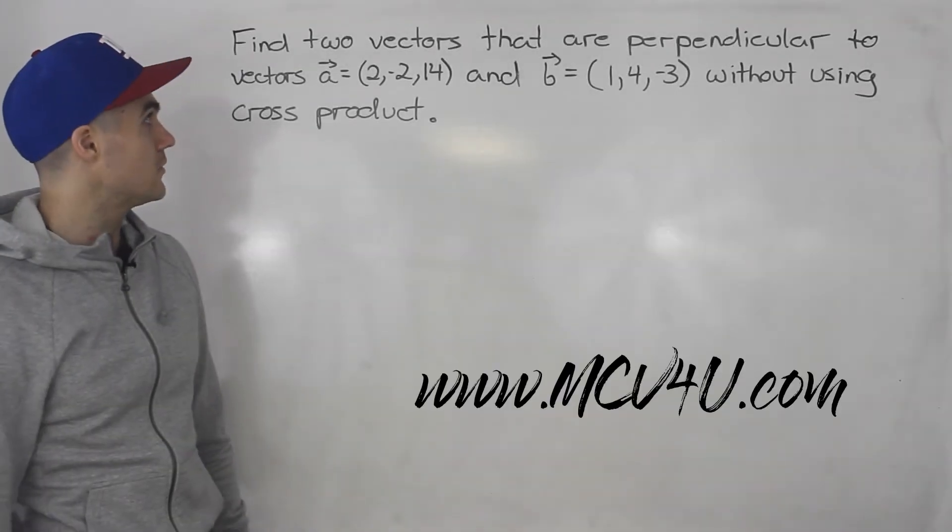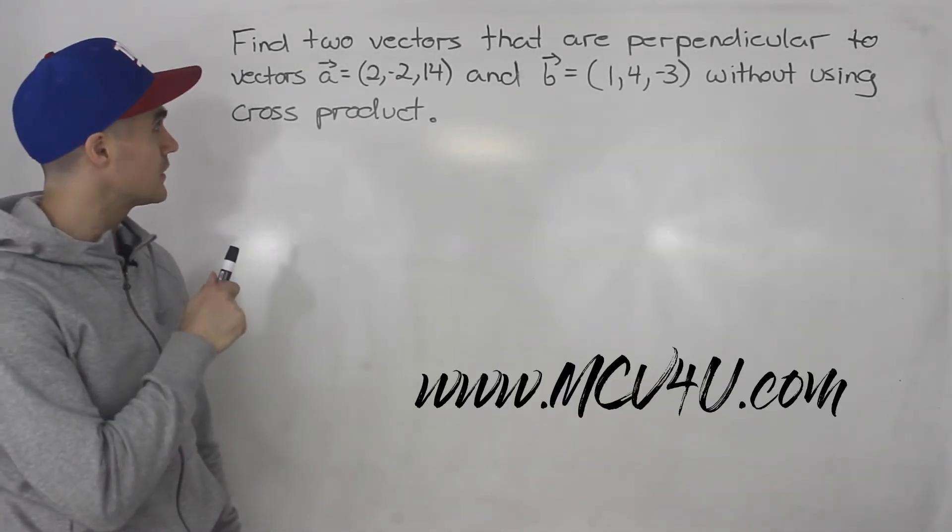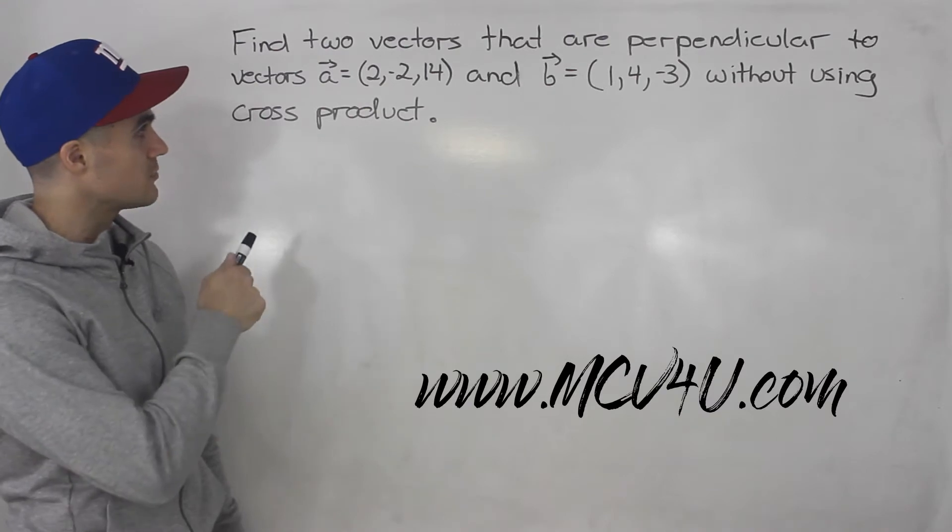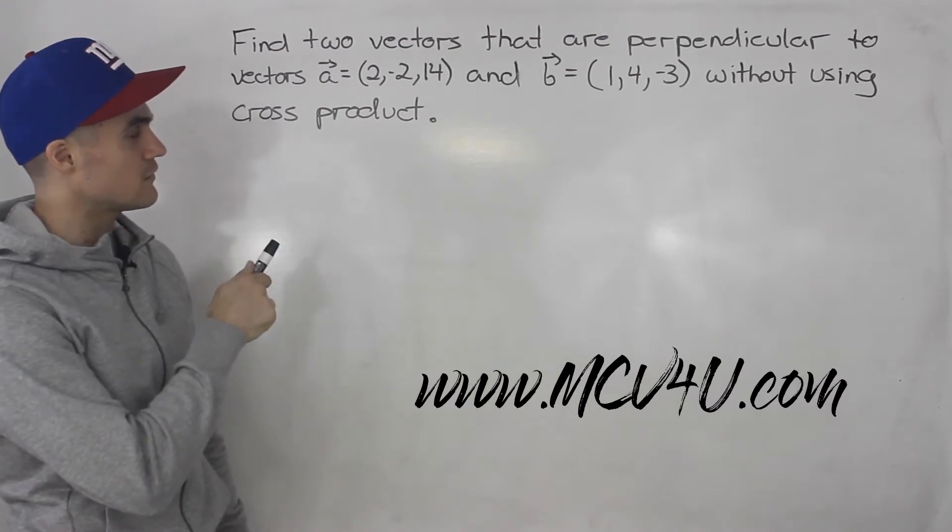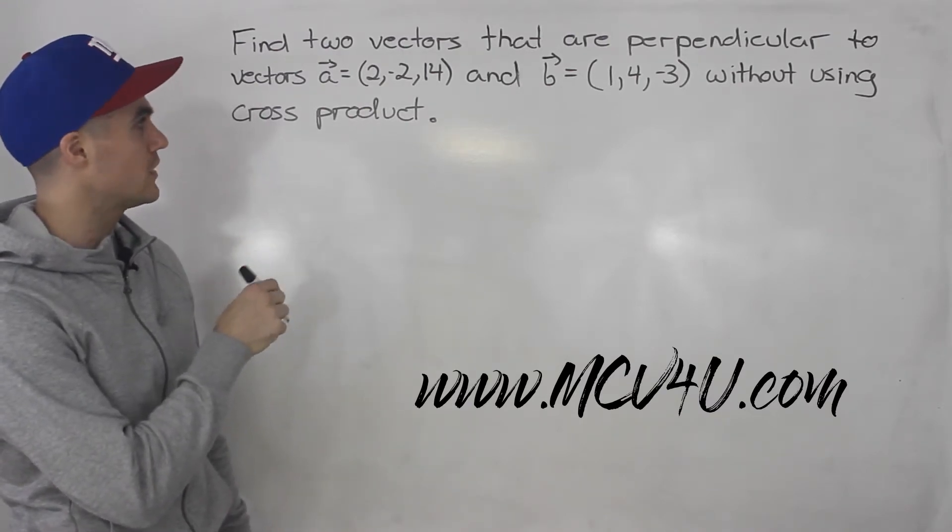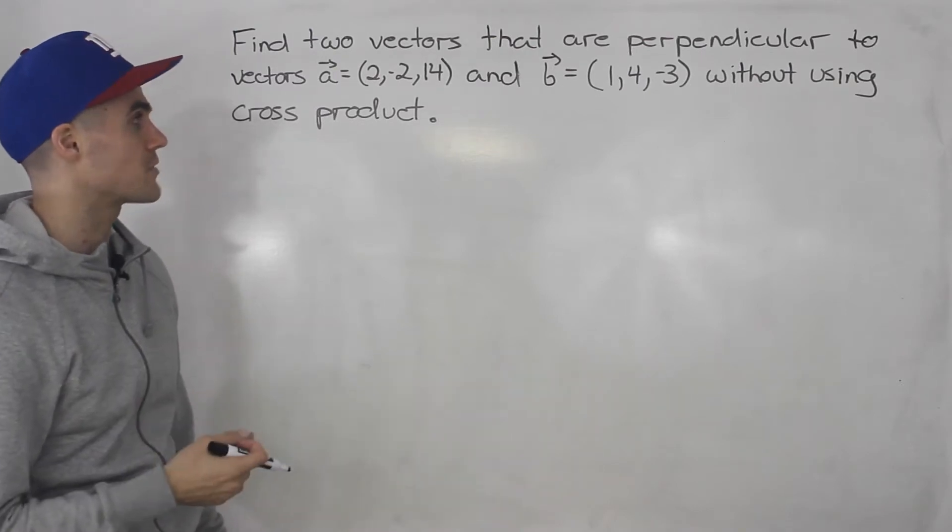Welcome back, everybody. In this video, we have to find two vectors that are perpendicular to vectors A, which has components 2, negative 2, and 14, and vector B, 1, 4, and negative 3, without using the cross product.